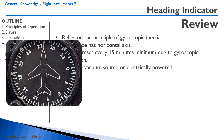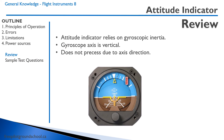The heading indicator can be vacuum-powered or electrically powered. The attitude indicator functions on the principle of gyroscopic inertia, or rigidity in space. The gyroscope axis is vertical. The attitude indicator does not precess due to the axis direction.